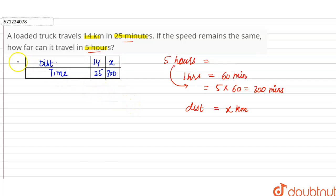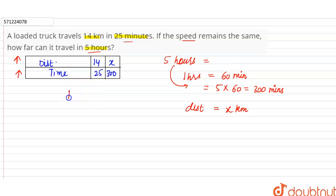As we increase our distance, time taken will also increase, since the speed remains the same. So we can say distance and time are in direct proportion.